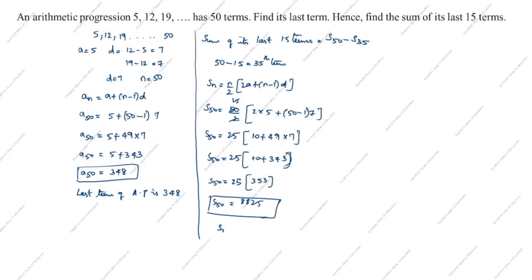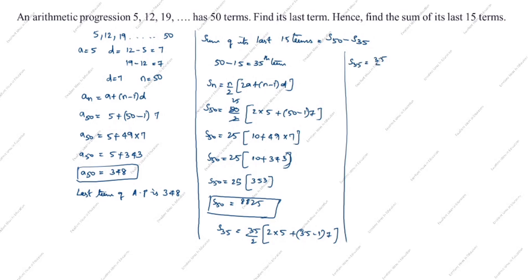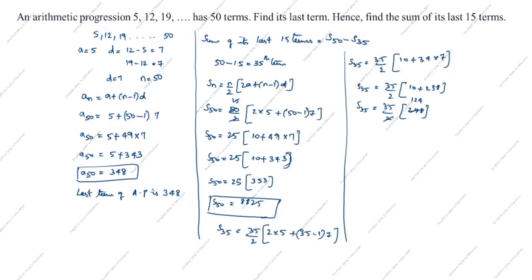Next we will find S₃₅. S₃₅ is equal to 35 by 2, open the bracket, 10 plus 35 minus 1 into d is 7. That gives 10 plus 238. Simplifying: 35 by 2 into open bracket 10 plus 238. After cancellation, S₃₅ is equal to 35 into 124, which is 4340.